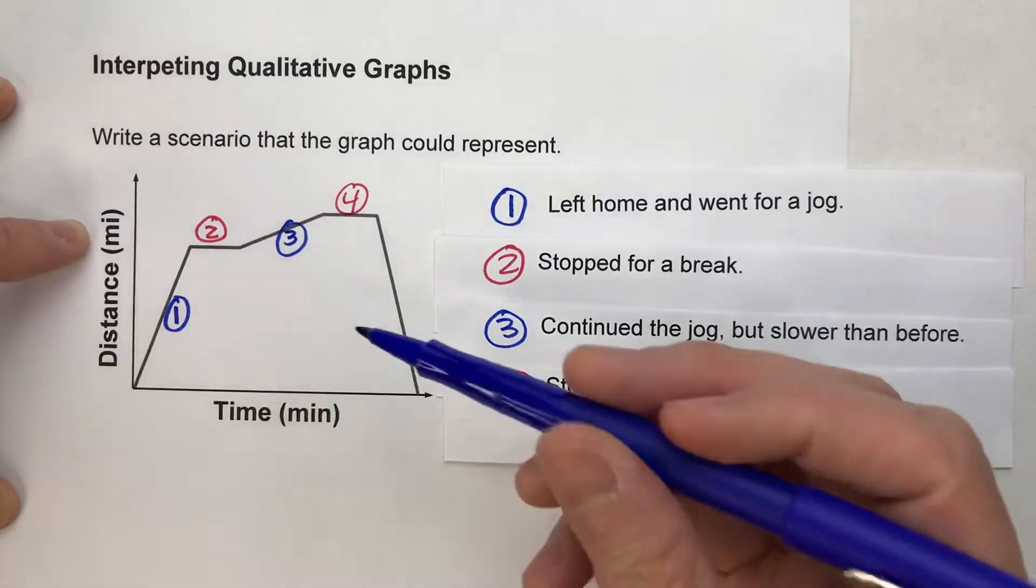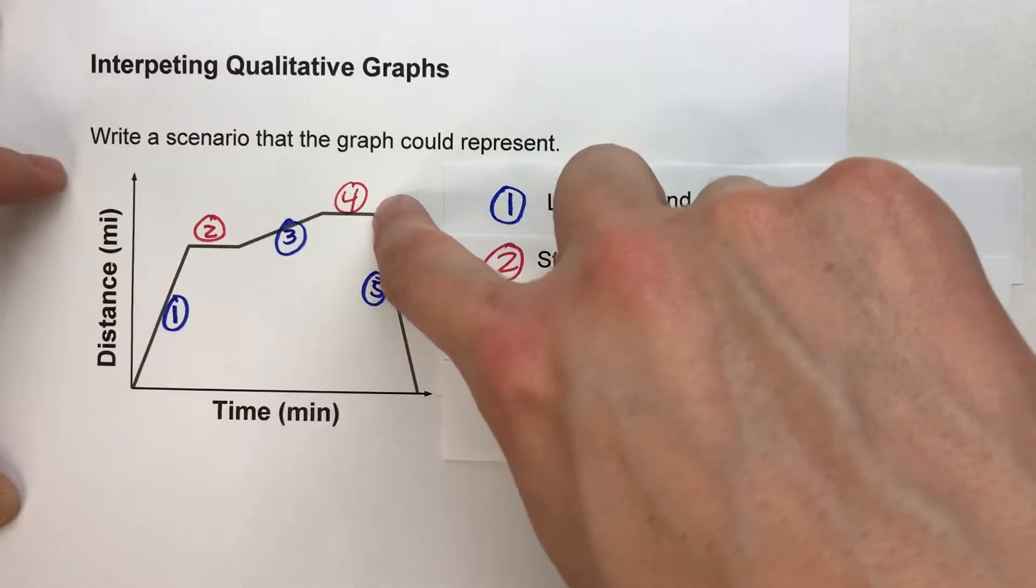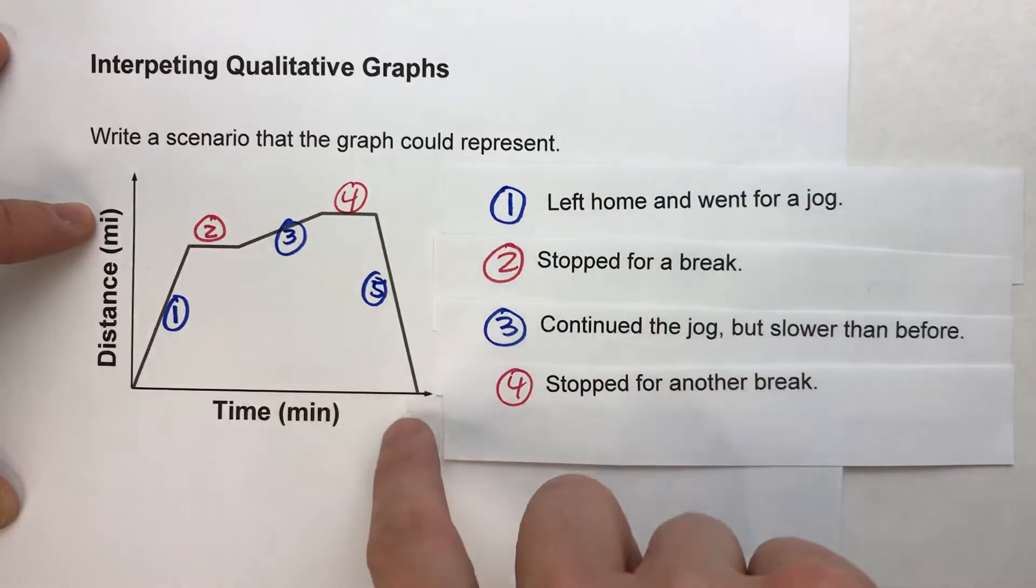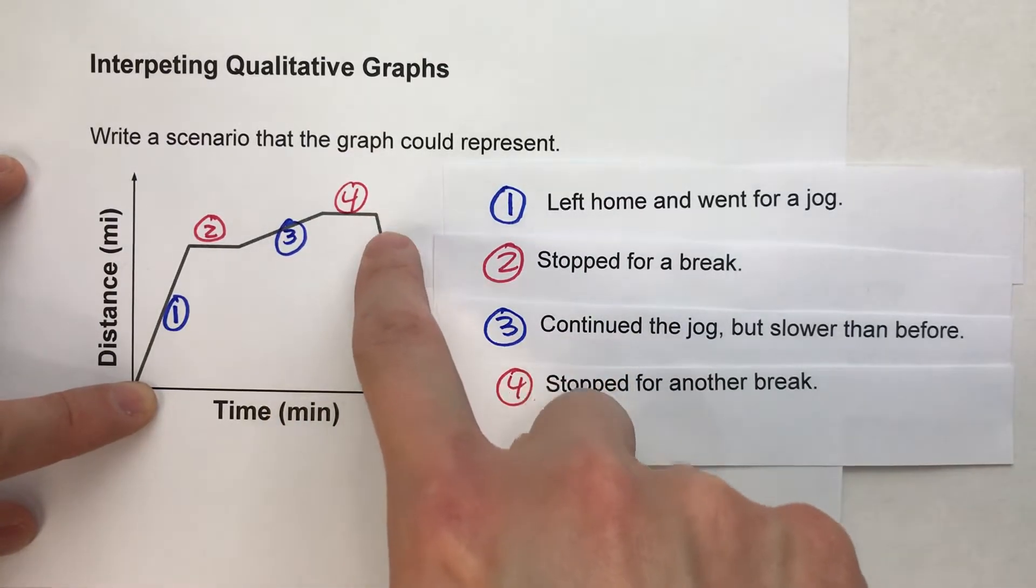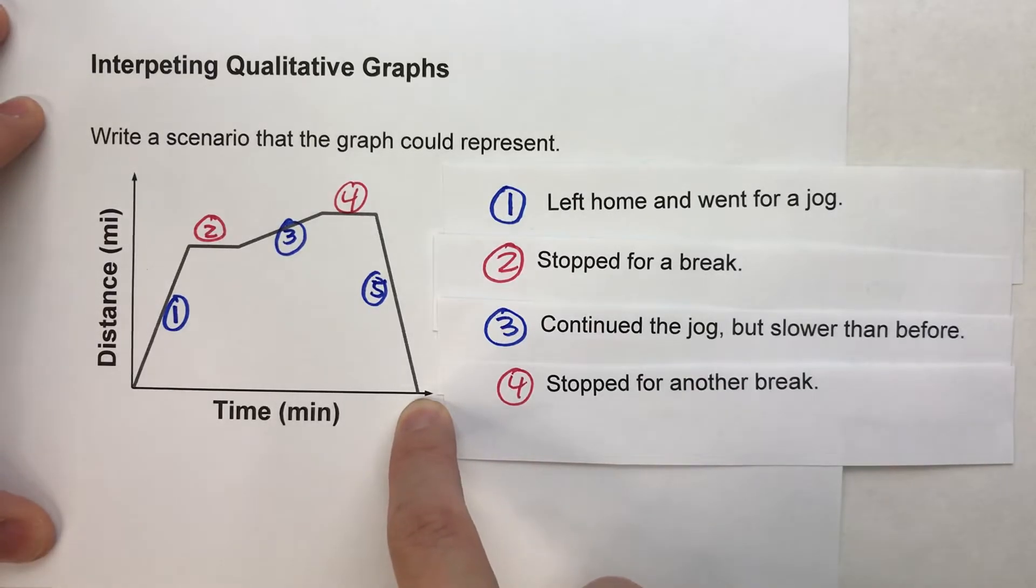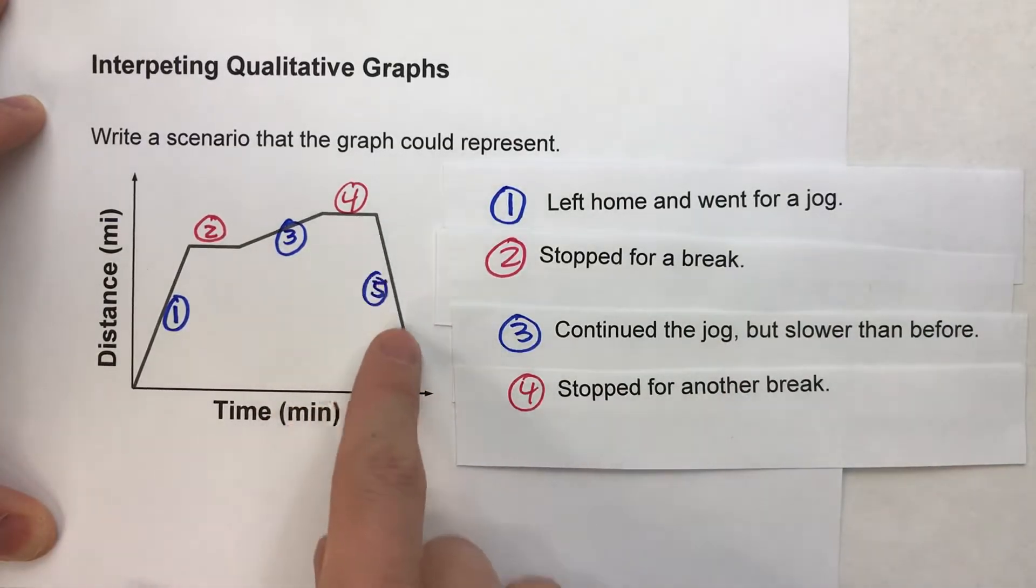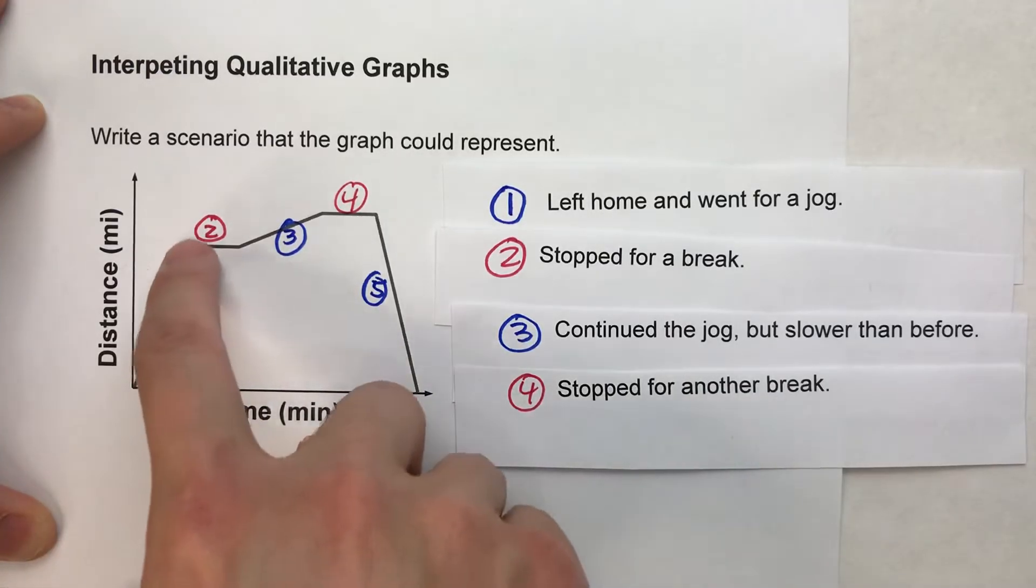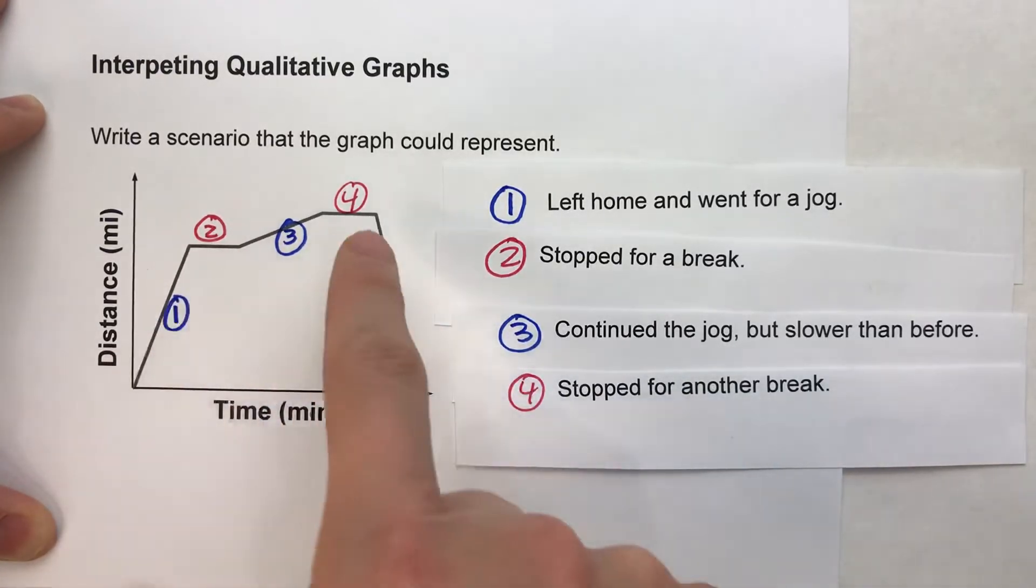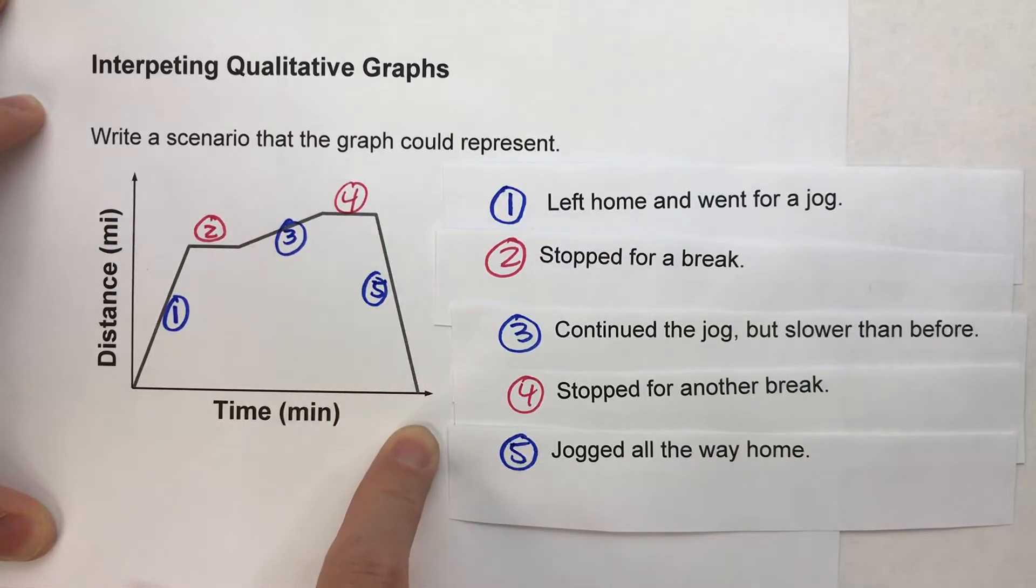And then finally this fifth section. Notice in this fifth section we're decreasing. Wherever we were now we go all the way back down to zero. So in this case maybe we after our break we just went all the way back home. But also notice not just that we're decreasing but look at how steep this line is compared to the previous one. So we're going pretty quickly. Maybe about as quickly as over here. This steepness and this steepness very similar although they're in opposite directions. So we can say for that fifth section we probably jogged all the way home.